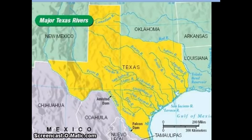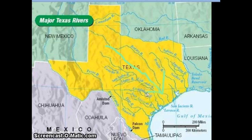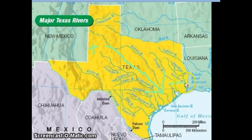You will notice that the rivers all empty into the Gulf of Mexico. This is because of the elevation. The rivers flow towards the east, or southeast, towards the direction of the Gulf of Mexico. They come from the highest elevation and go to the lowest.